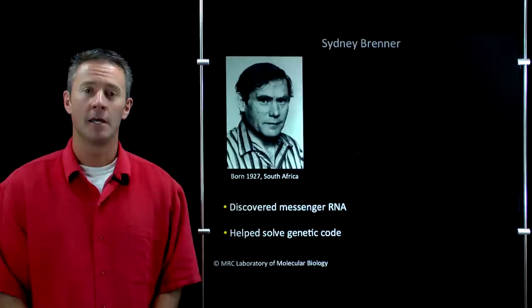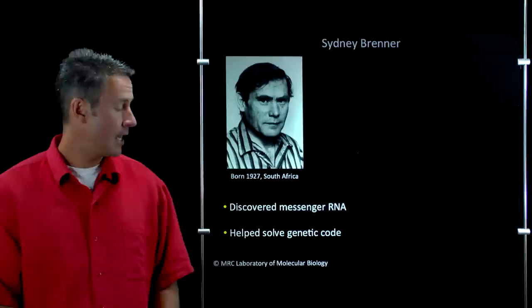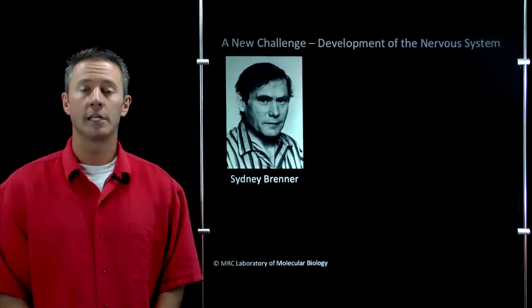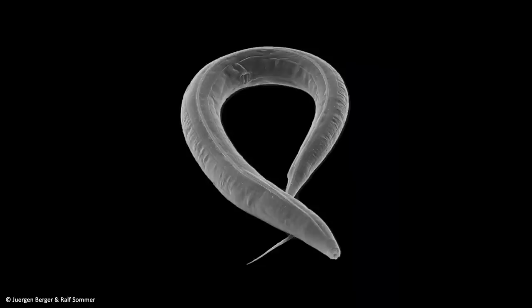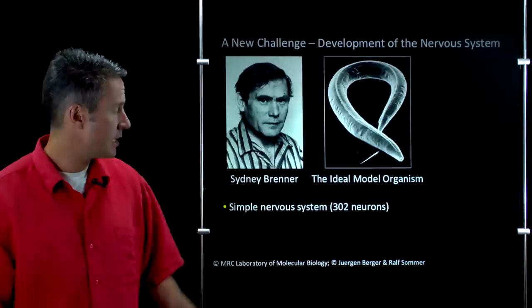He decided to move on to another project. He realized that more and more people would be getting involved in research on the central dogma, so the problem he chose to work on was the development of the nervous system — how neurons form during development and how they all get wired together in the right way to create a functional nervous system. He chose to take a model organism approach, and after careful consideration, he decided on C. elegans, for two major reasons. First, C. elegans has a very simple nervous system: adult animals have exactly 302 neurons, and those neurons are wired together in exactly the same way from one organism to the next.